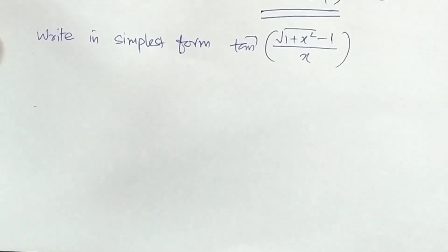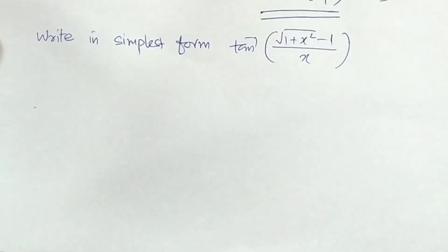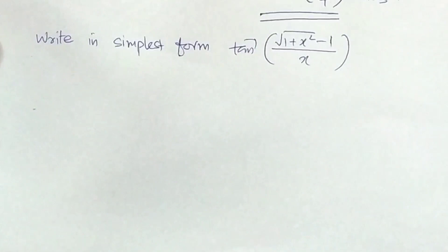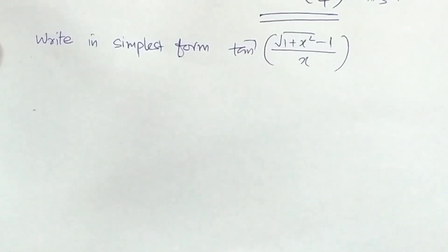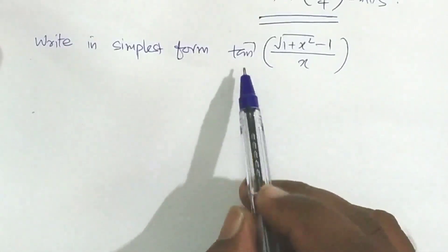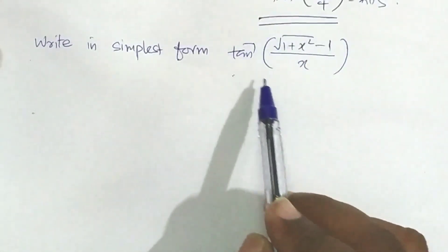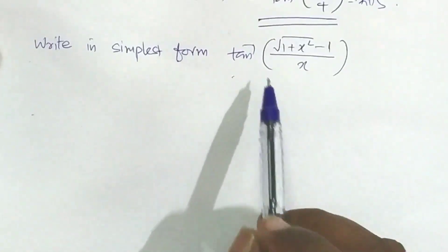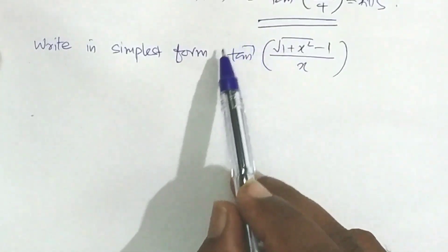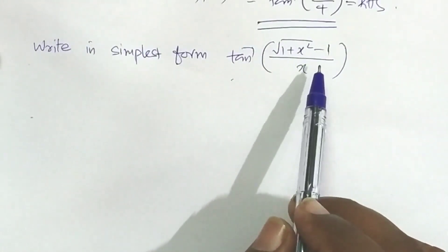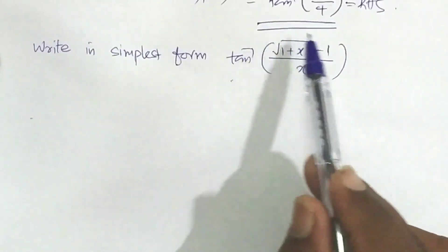The second type of question is: write in simplest form. The given expression is tan inverse of (root(1 plus x squared) minus 1) divided by x. Tan inverse is an inverse trigonometric function, and a trigonometric function exists inside.